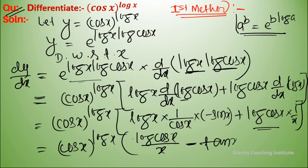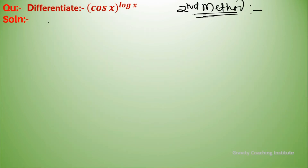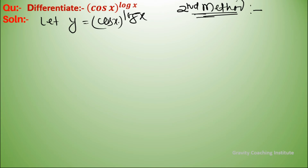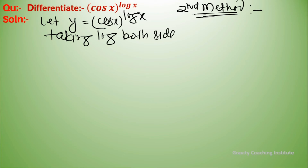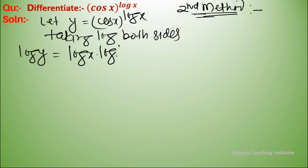Simplifying, we get cos x to the power log x times log cos x upon x minus tan x times log x, which can also be written as log x into log cos x.